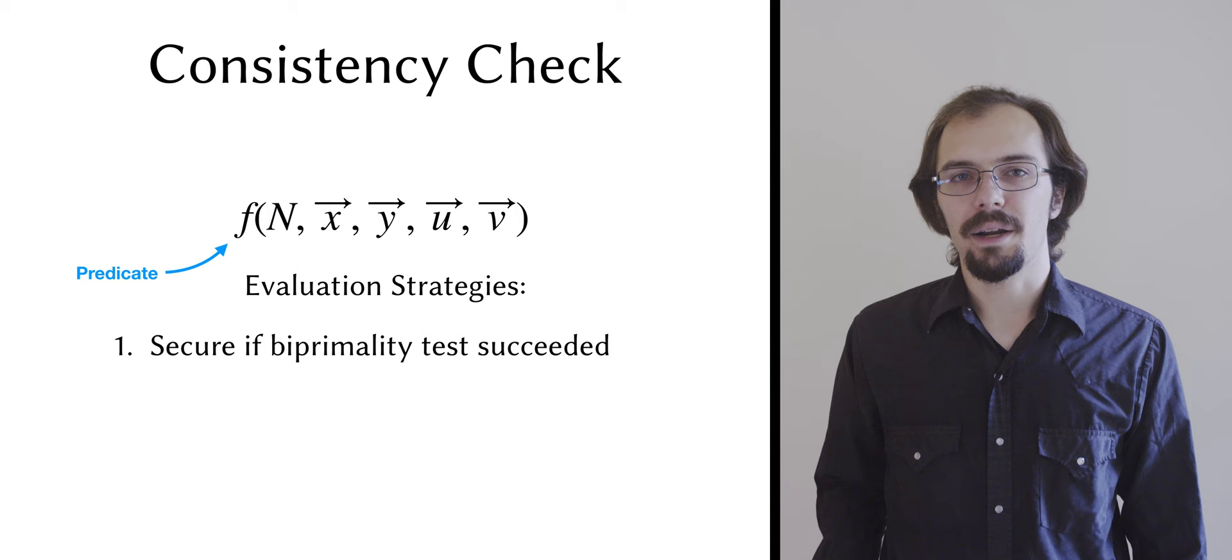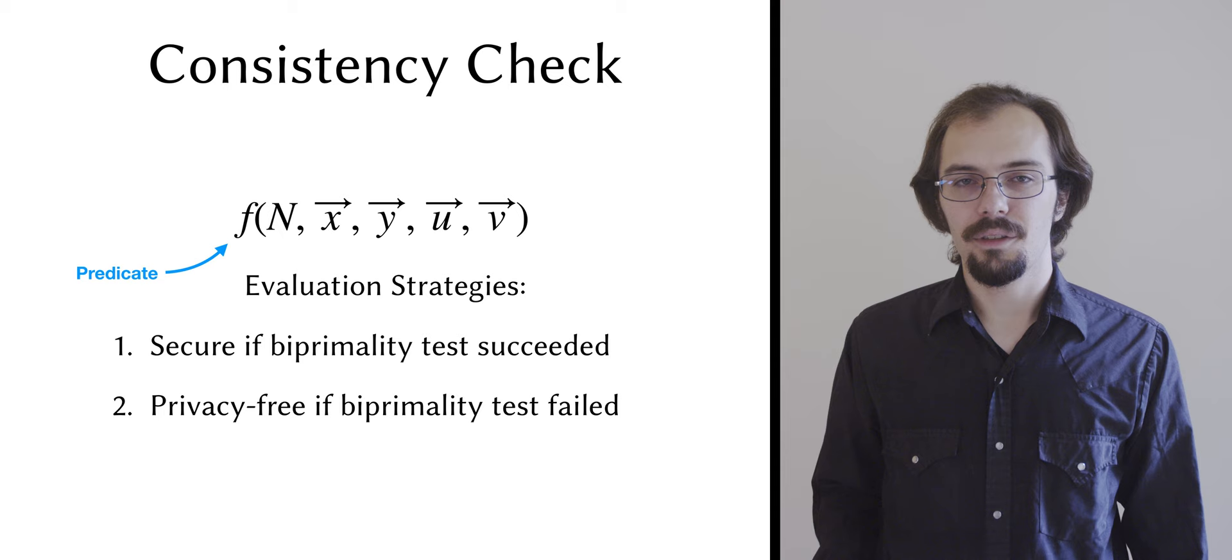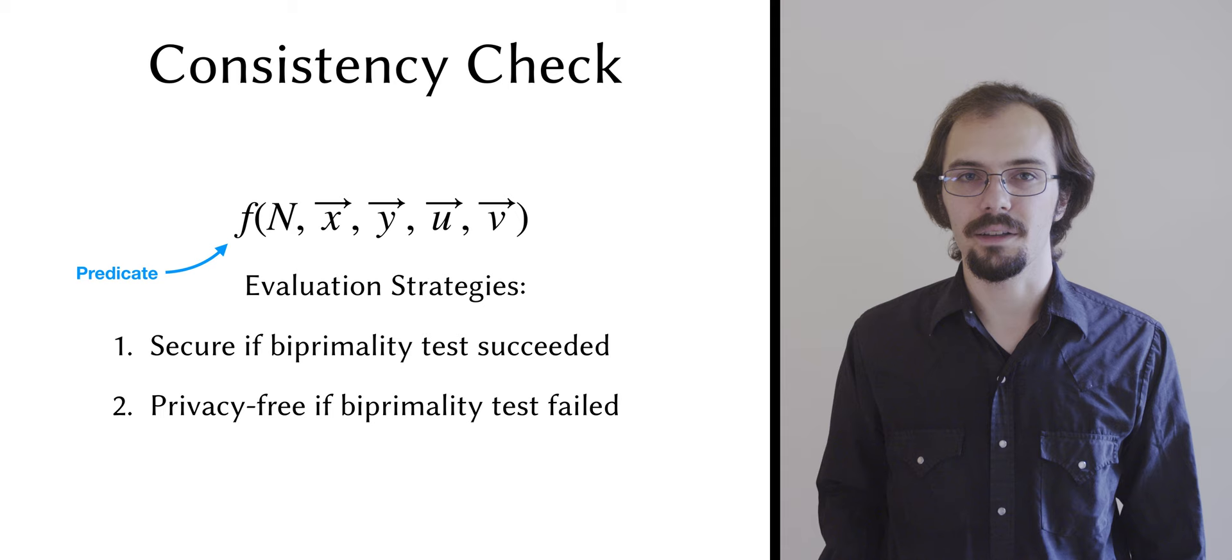If the biprimality test failed, then either n isn't a biprime or some party cheated. Regardless, there's no need for privacy, and so the parties open up their values to one another and verify the predicate locally, which is much faster.